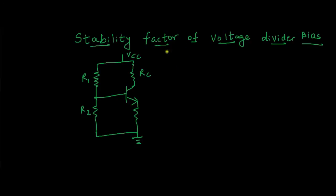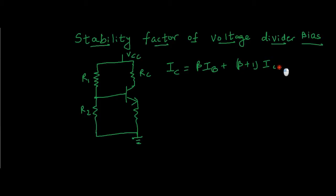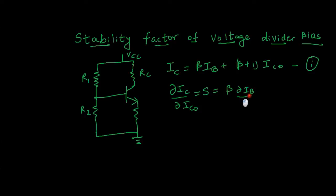We know that IC is equal to β times IB plus (β + 1) times ICO. This is equation 1. Differentiating equation 1 with respect to ICO — this partial differentiation δIC/δICO is nothing but our stability factor S. This becomes β times δIB/δICO plus (β + 1).